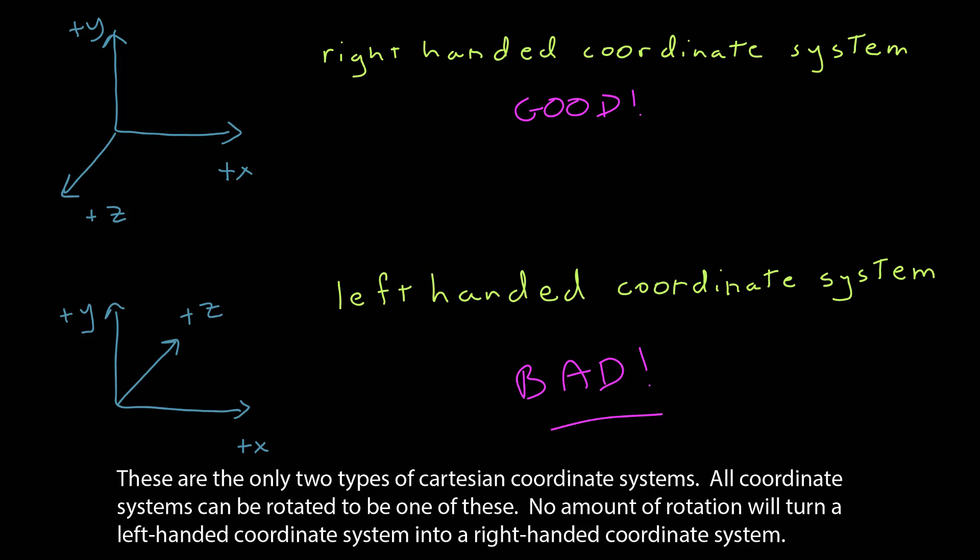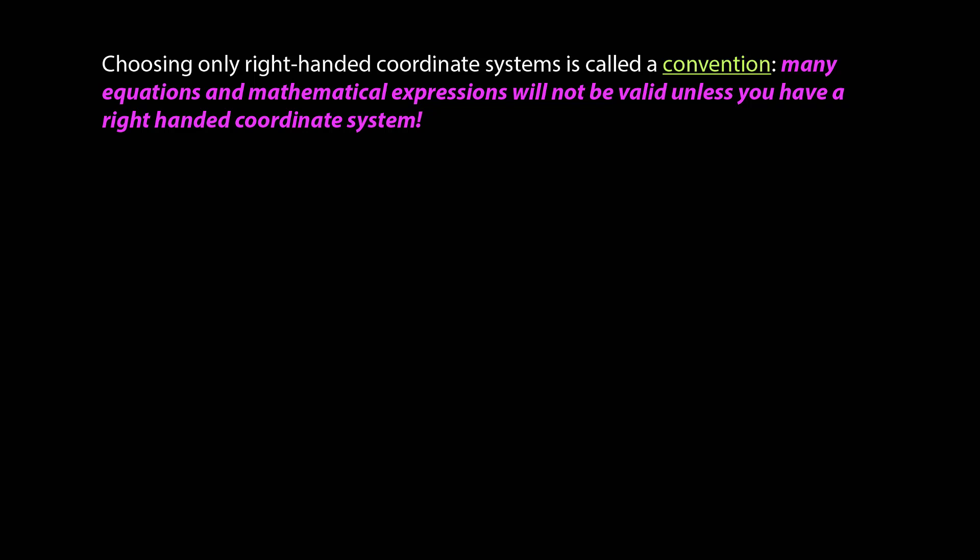And you need to choose one or the other. Now you might have asked, why did we choose right-handed coordinate systems? We didn't have to. We could have chosen left-handed ones. But the problem is we have to make a choice and stick with it because we will get different mathematical results depending on the type of coordinate system that we use.